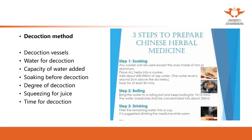When preparing a decoction, you're going to cook the herbs. Raw herbs you get from the pharmacy: add the herbs to a pot. You can use any cooker but not one made of iron or aluminium. Add water to soak the herbs — the amount of water depends on the amount of herbs, more or less 600 to 900 ml. Soak for at least 30 minutes.